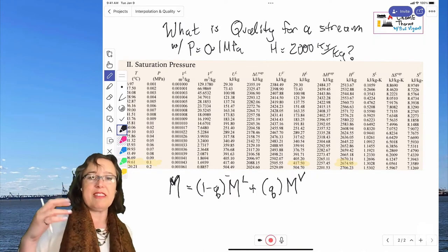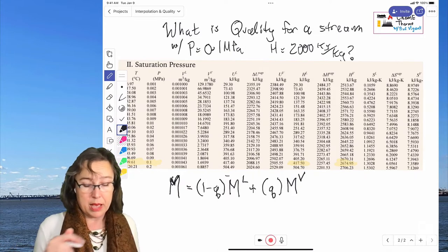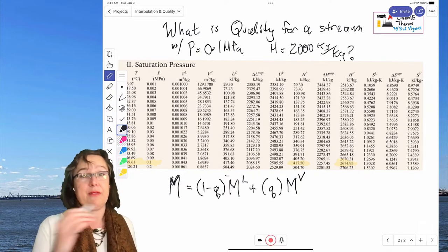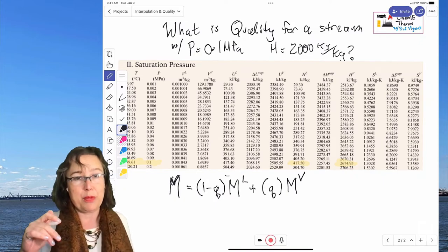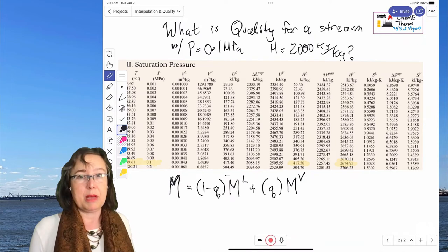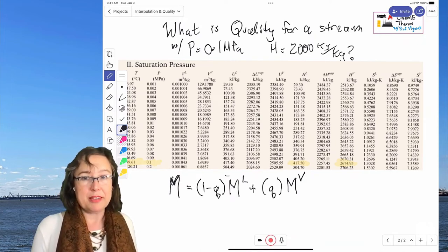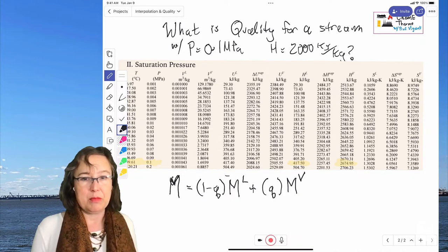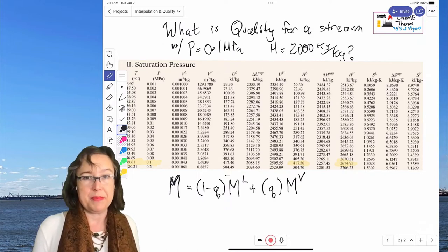Now you'll notice this is not conveniently phrased so it's easy to solve for quality, but it is conveniently phrased so that we could solve for enthalpy. So if we knew the quality to begin with, we could work this out as written here, but since we don't actually know the quality to begin with, we are trying to solve for the quality, we have to rearrange this algebraically to turn it into Q equals something, right?